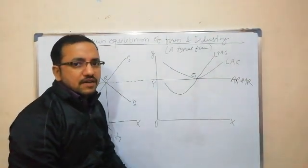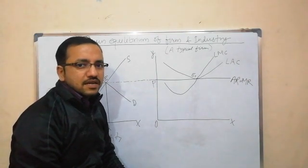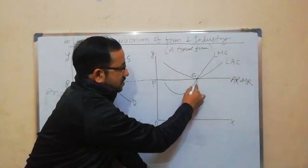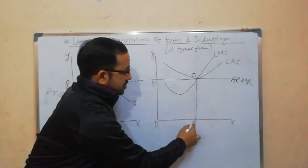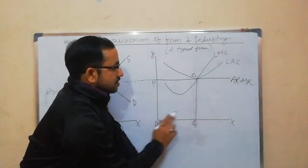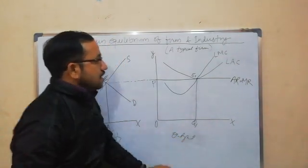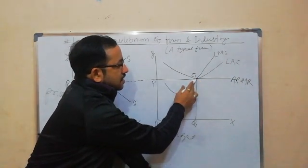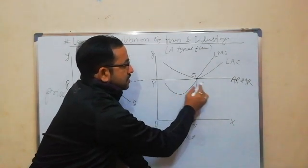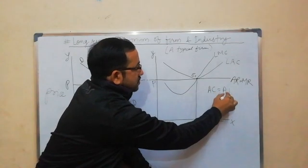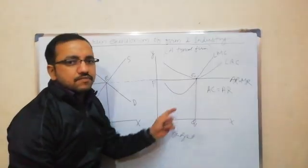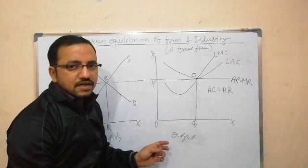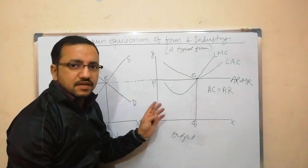At point e1, MR is equal to MC and MC has cut MR from below. Therefore, e1 is the equilibrium point for the typical firm, and at this equilibrium point the firm is producing and selling OQ1 units of output. At point e1, we can clearly see that average cost is equal to average revenue — AC equals AR — and therefore the firm is earning only normal profit.